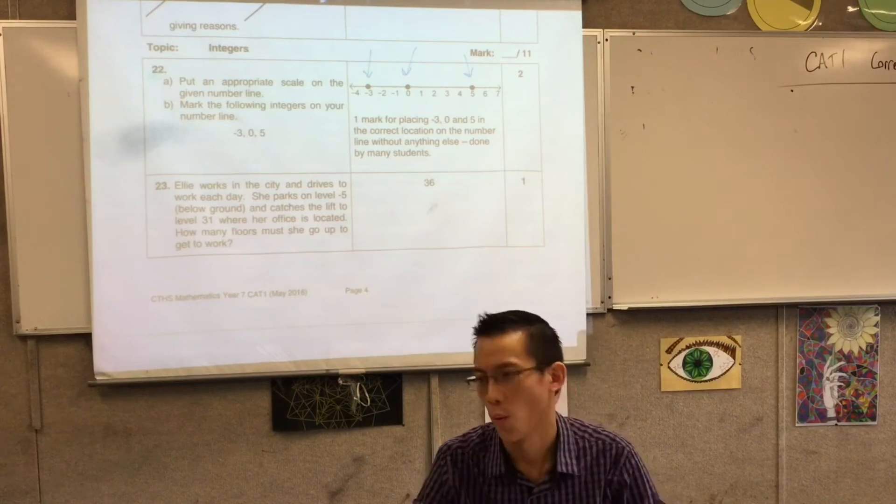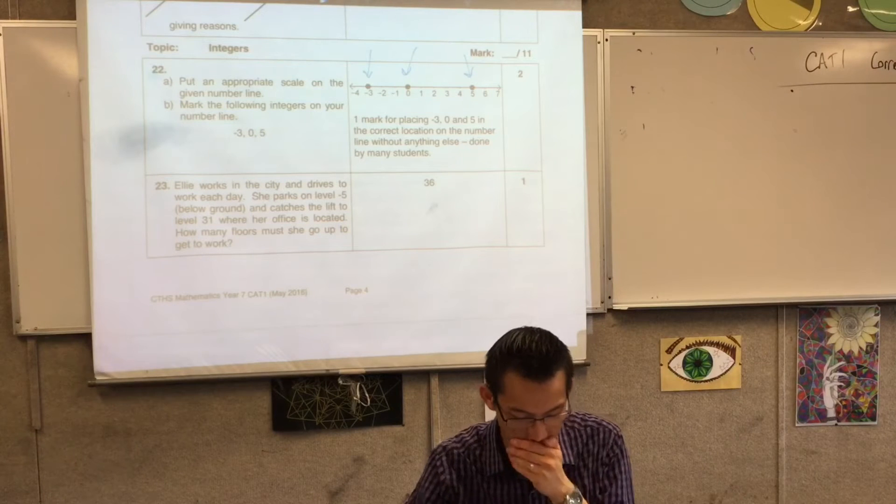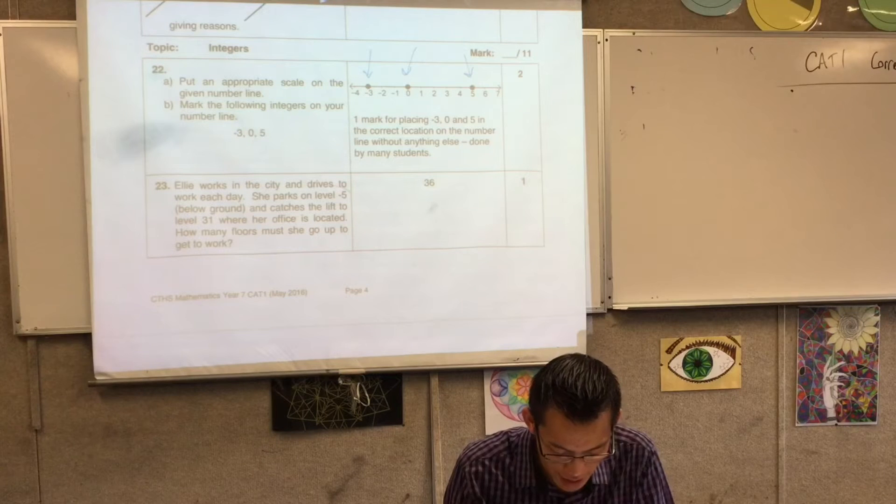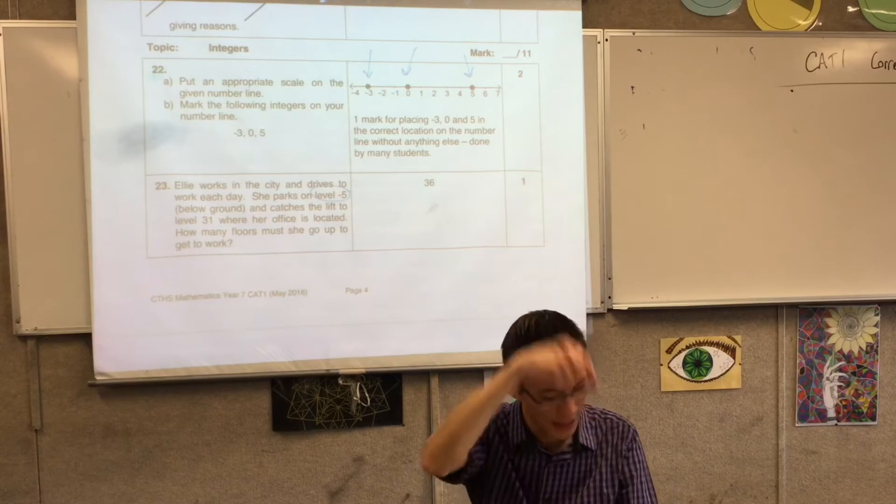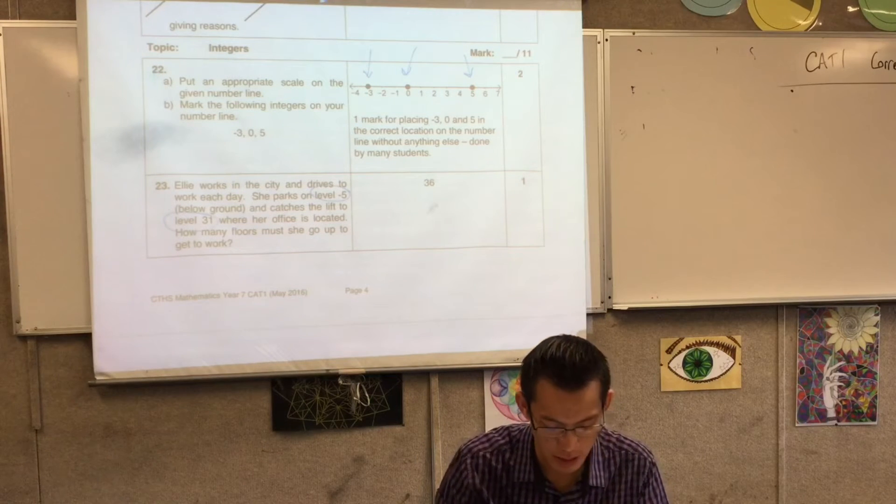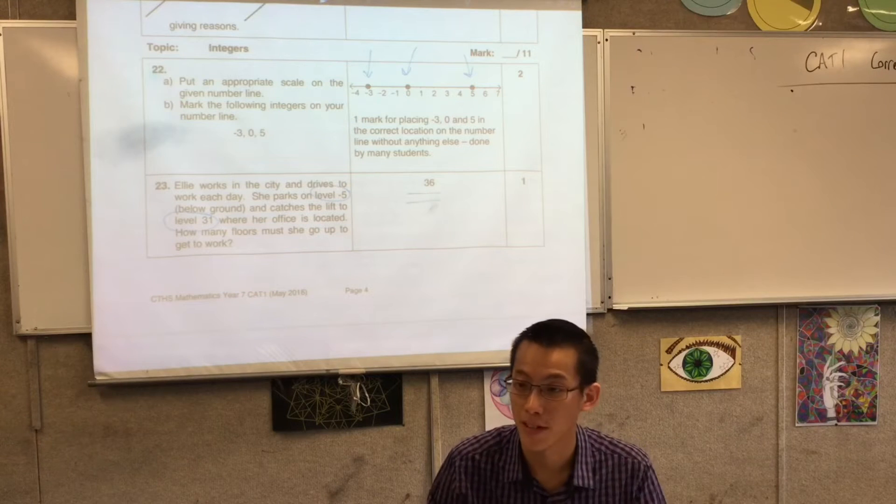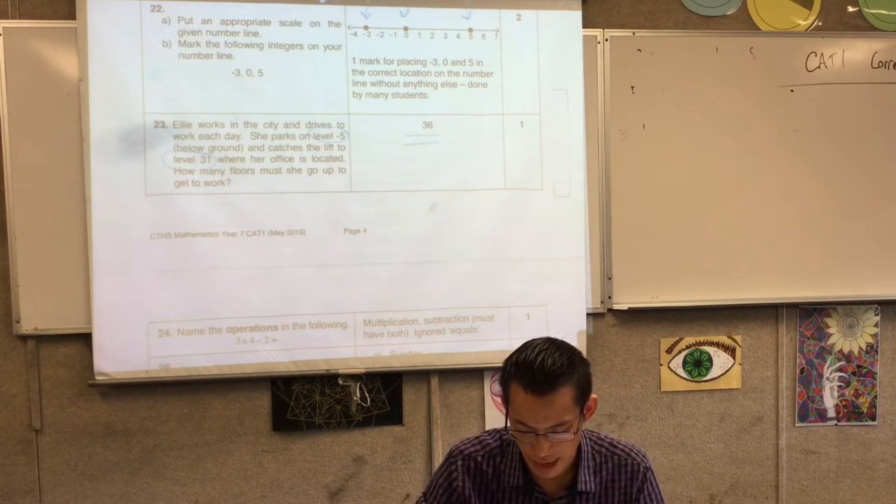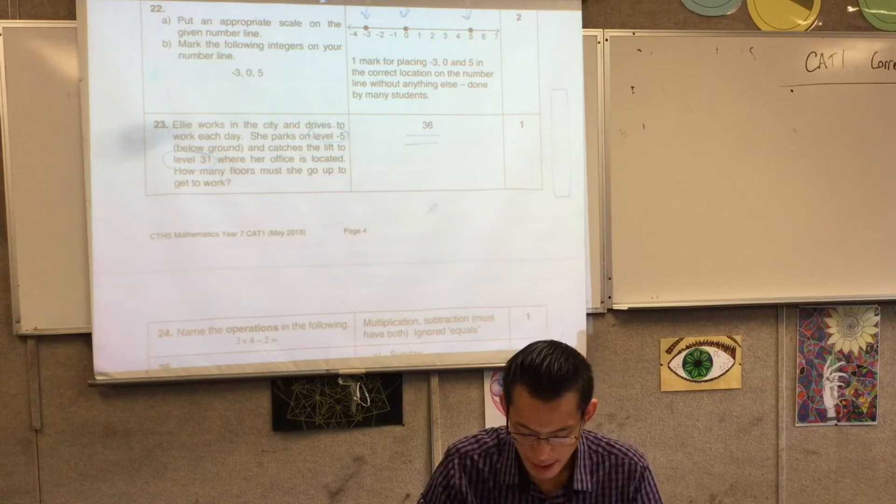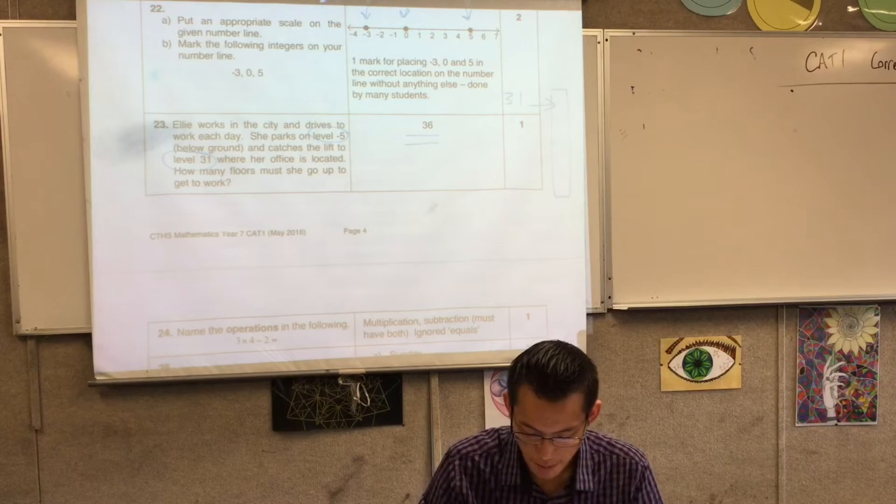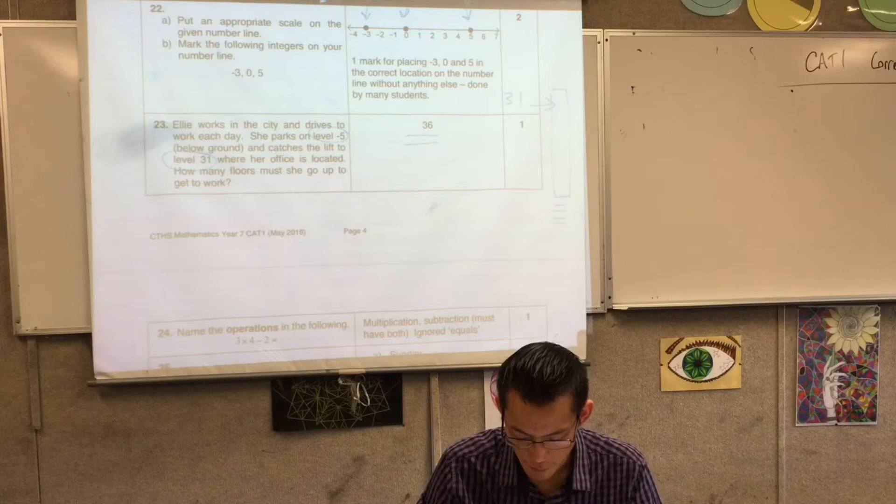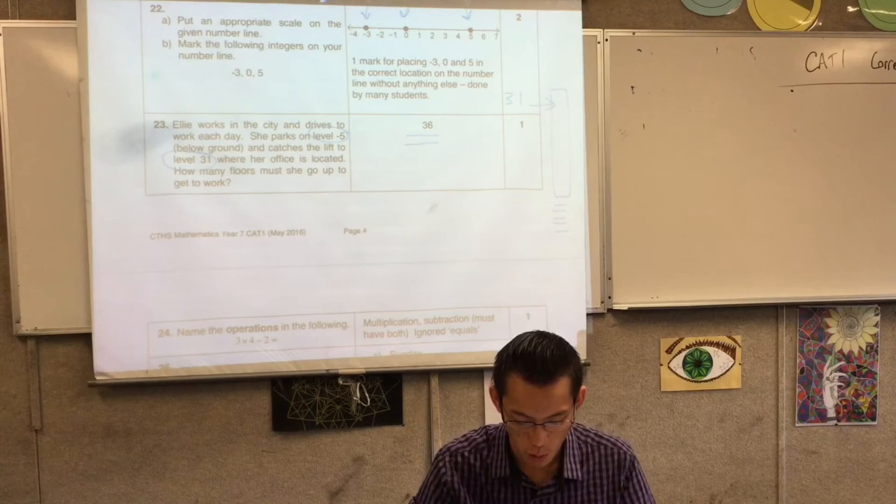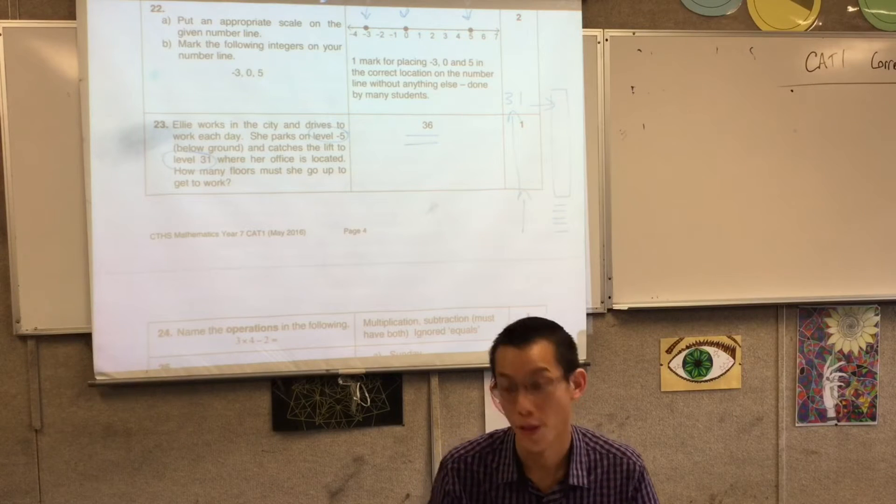Ellie works in the city, so she parked on level negative 5, which is like a basement level, and then she goes all the way up to 31. So you needed to find the difference between those. I noticed some people drew a diagram, so there's like a building and level 31, and she is 1, 2, 3, 4, 5 below ground. So she's got to go all the way up those 31 and also up those five, and that's where the 36 number came from.